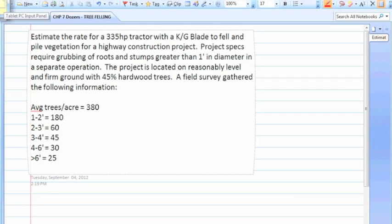Hello everybody, this is Ryan. I'm going to walk through an example problem for Professor Hallowale's construction engineering course. We're looking at chapter 7, dozers, and we're looking at the tree felling section.